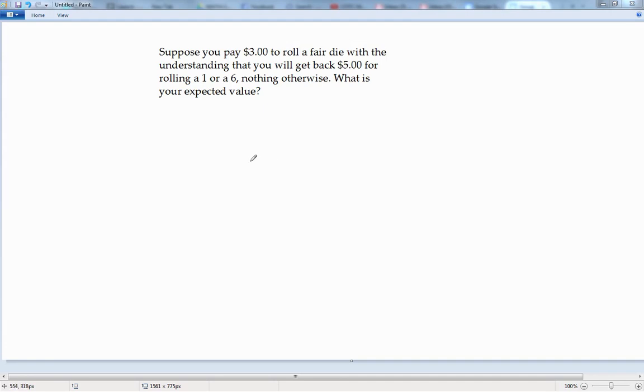So first of all, let's set up our table and we've got two possibilities, either we're going to win or we'll lose. So here we're going to put our amount that we'll win or we'll lose, and here we'll put our probability of that.